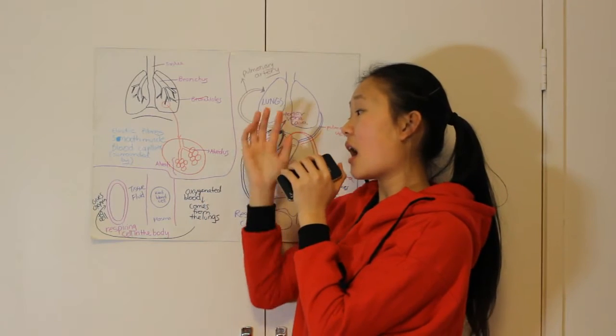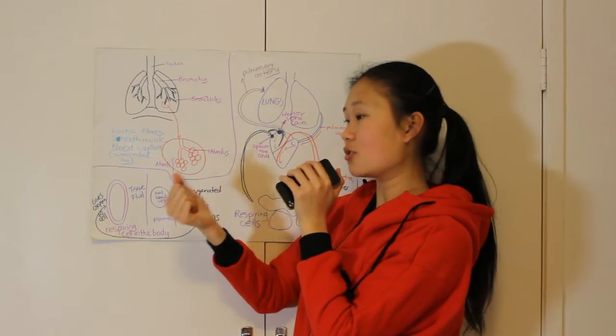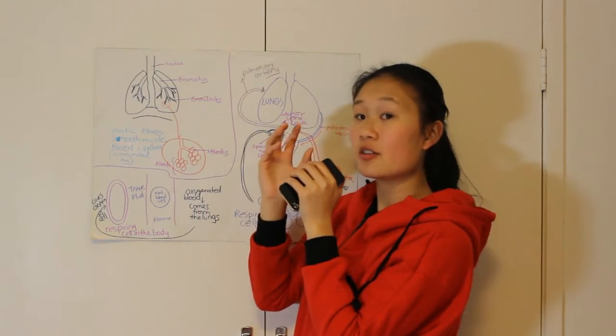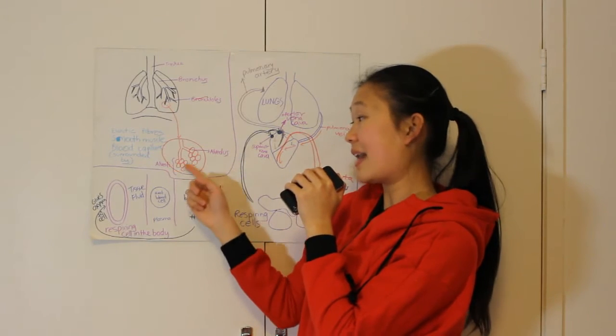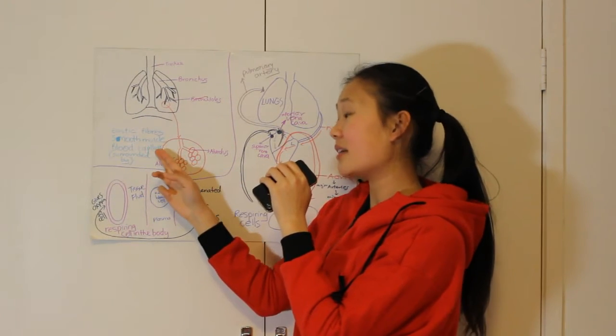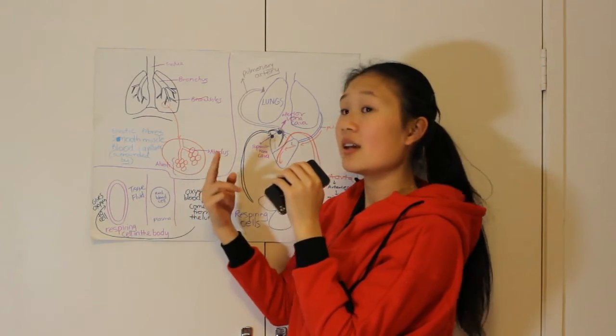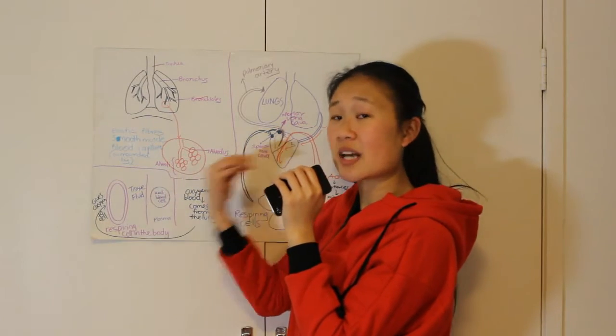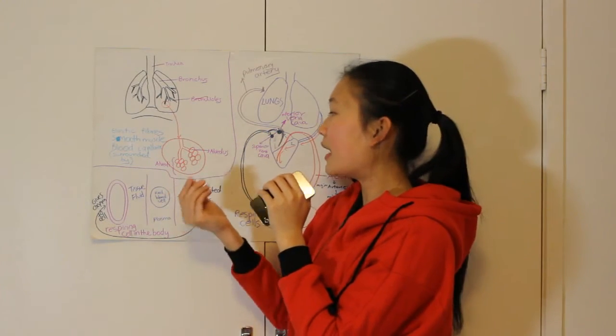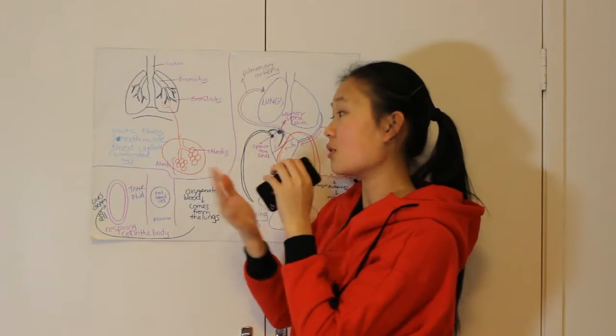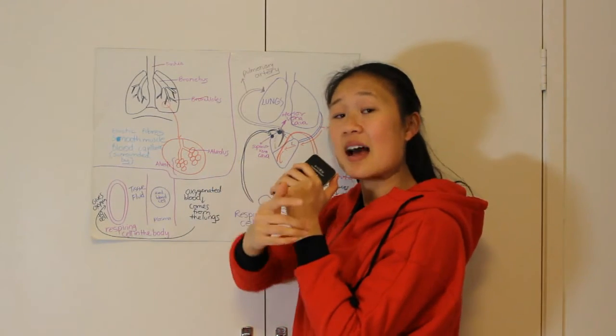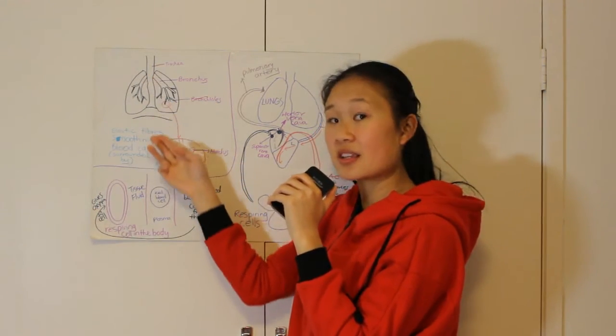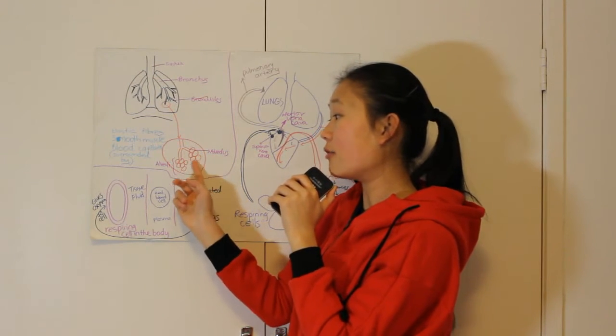When many alveolus group together to become a grape-shaped structure, it is called alveoli. There are blood capillaries that surround the alveoli so that quick and efficient gas exchange between carbon dioxide and oxygen can occur. The elastic fibers and smooth muscle in the alveoli allow expansion and ease of inflation when air is breathed in and taken to the alveoli.